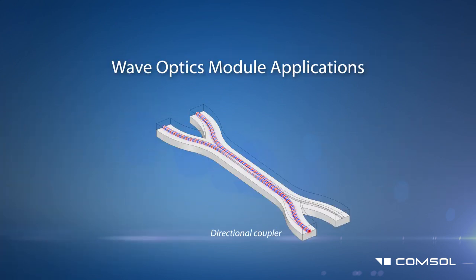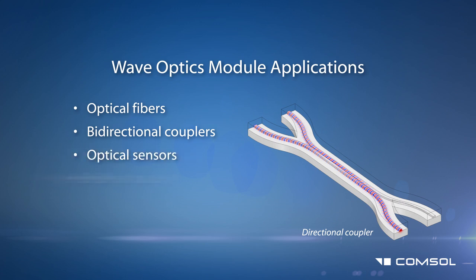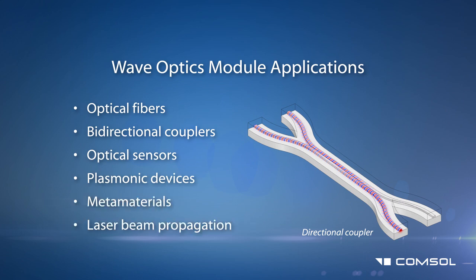Used in geometrically large systems where light waves cannot be approximated with rays, the module is useful for simulating optical fibers, bi-directional couplers, optical sensors, plasmonic devices, metamaterials, and laser beam propagation. The Wave Optics module is shipped to all who have a current subscription for the RF module.